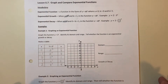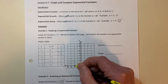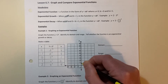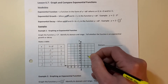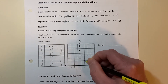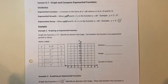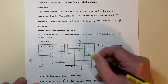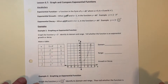Then we just plot these points: negative two up a fourth, negative one a half, zero one, one two, two four. Notice this is not a linear relationship — it's curving. What's going to happen is it's going to continue to get steeper as you go to the right, continuing to curve upward.